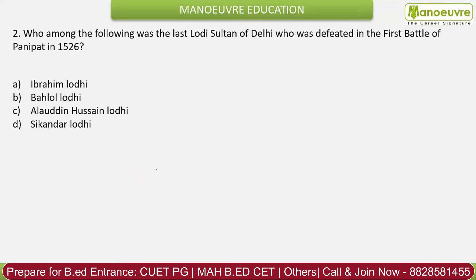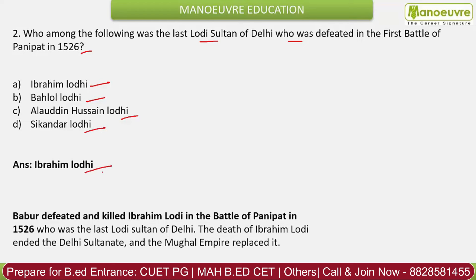Question 2: Who among the following was the last Lodhi Sultan of Delhi, defeated in the First Battle of Panipat in 1526? Options: Ibrahim Lodhi, Behlol Lodhi, Alauddin Hussein Lodhi, Sikandar Lodhi. The correct answer is Ibrahim Lodhi. In 1526, Ibrahim Lodhi was defeated by Babur, after which Babur established the Mughal Empire in India. In 1527, Babur fought the Battle of Khanwa with Rana Sanga.